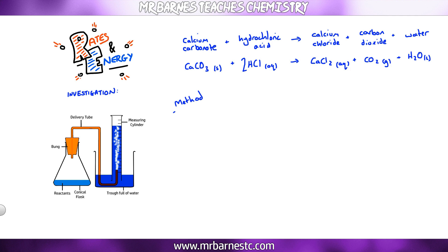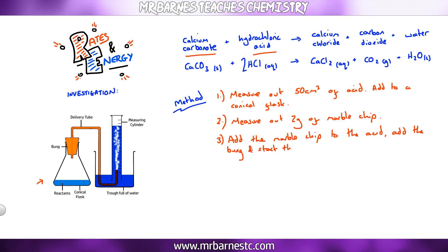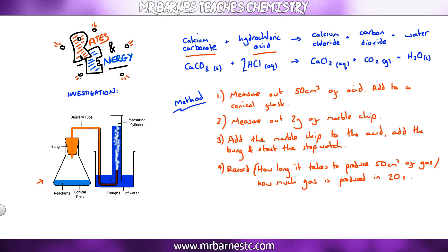For the method: first, measure out 50 cm³ of hydrochloric acid and add it to a conical flask. Then measure out two grams of marble chip calcium carbonate, add it to the conical flask, put the bung in, and start your stopwatch. Your endpoint — you can either record how long it takes to produce 50 cm³ of gas, or how much gas is produced in 20 seconds.